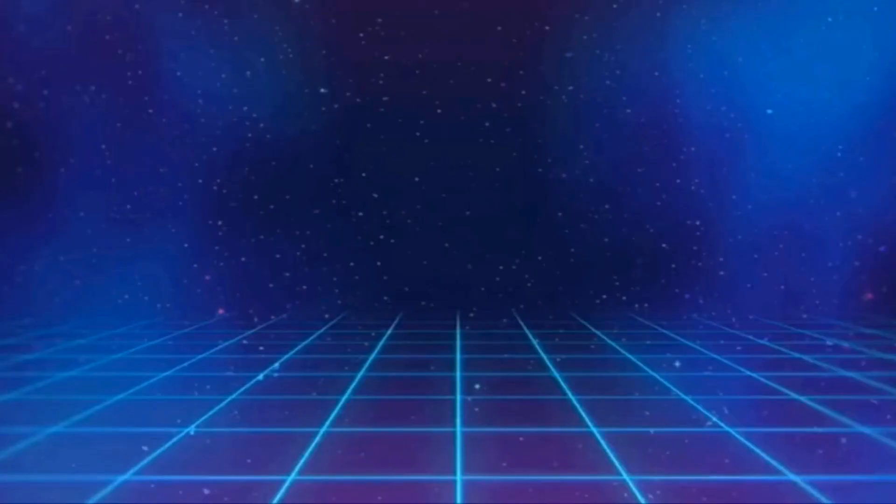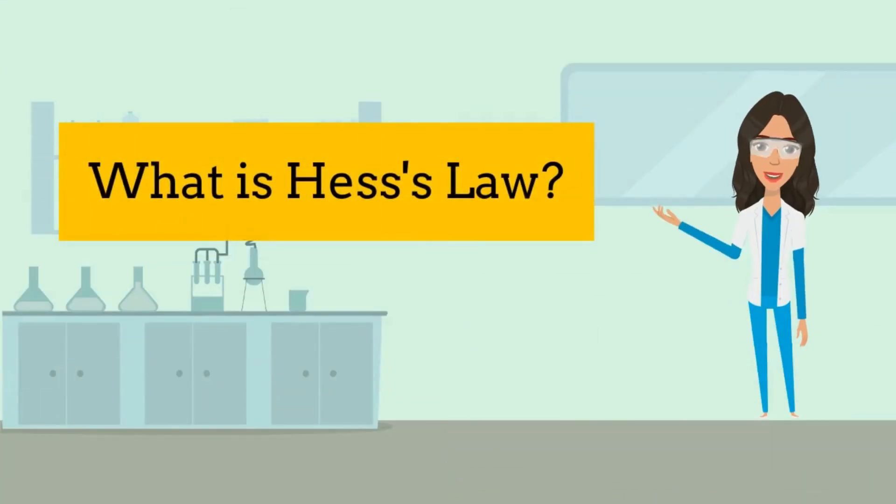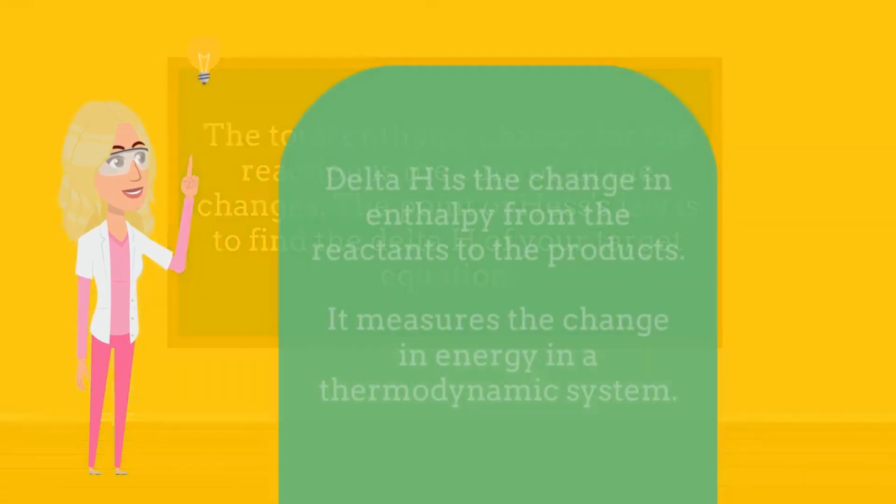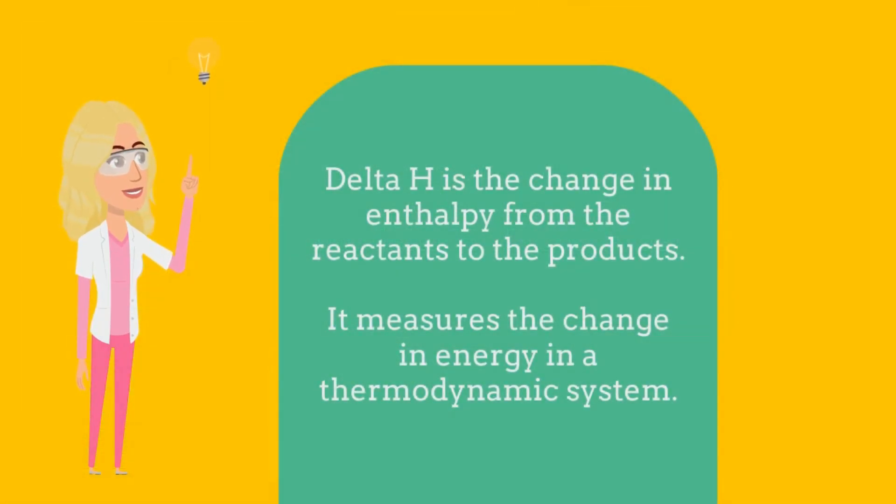What is Hess's law? Hess's law states that regardless of the multiple stages or steps of a reaction, the total enthalpy change for the reaction is the sum of all changes. The point of Hess's law is to find the delta H of your target equation. Delta H is the change in enthalpy from reactants to products, so it measures the change in energy in a thermodynamic system.